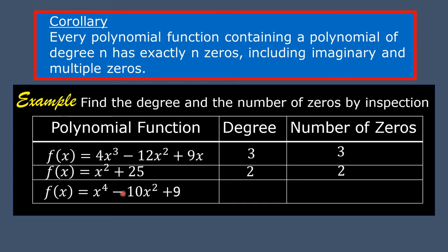The third polynomial function is f(x) = x⁴ - 10x² + 9. The exponent of x in the first term is 4, the second term is 2, and 9 is understood to be 9x raised to the exponent of 0. The highest exponent is 4, so the degree is 4 and the number of zeros is also 4.